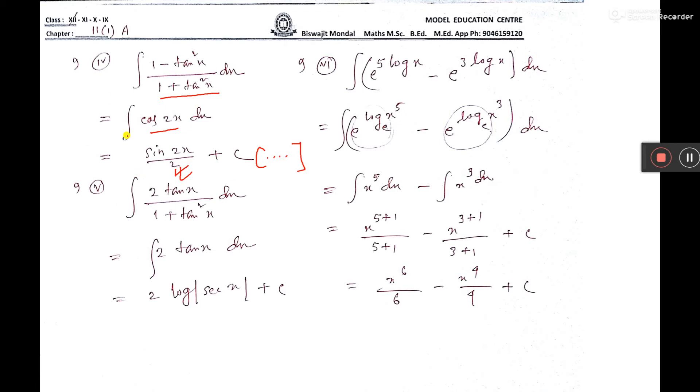Understand number 4. Okay, now number 5. (2 tan x)/(1 + tan²x). The formula is 2 tan 2x.